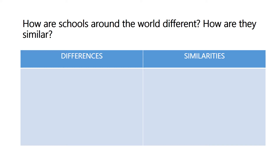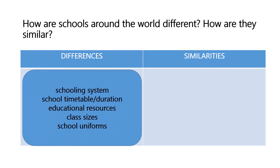The possible differences among schools might be schooling system, school timetable and duration, educational resources, class sizes, or school uniforms.